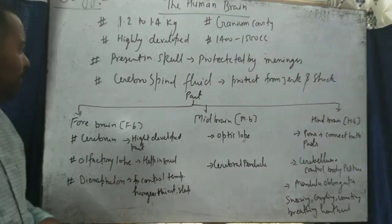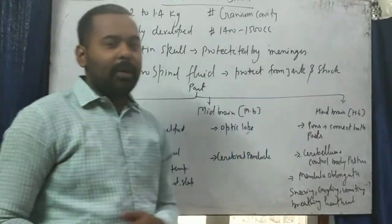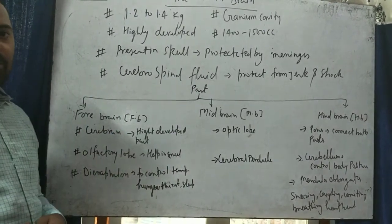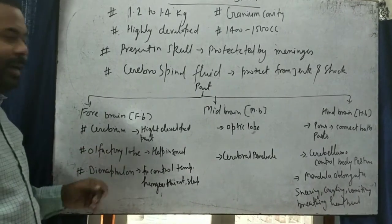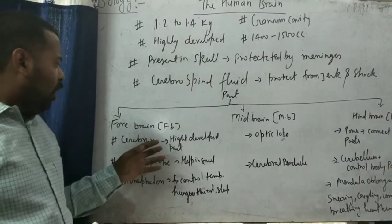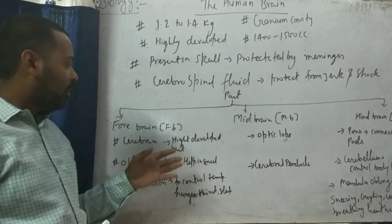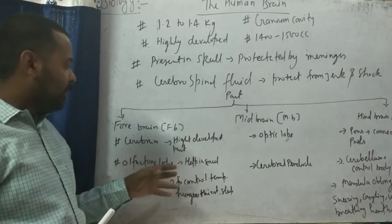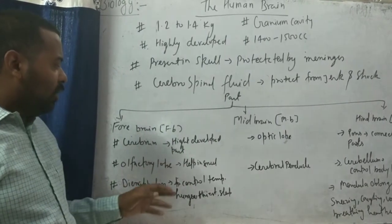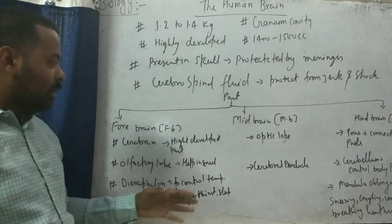The brain has three parts: forebrain, midbrain, and hindbrain. The forebrain is the front part of the brain and the most highly developed part, having three parts: cerebrum, olfactory lobe, and diencephalon. The cerebrum has highly developed thinking power and capacity. The olfactory lobe helps to detect smell. The diencephalon helps to control temperature, hunger, thirst, and many other functions in our body.